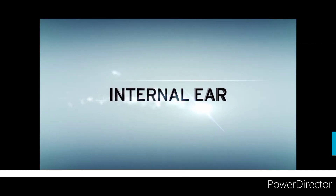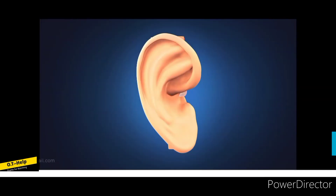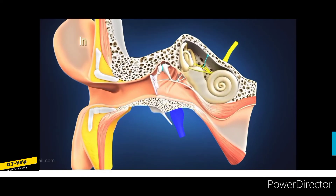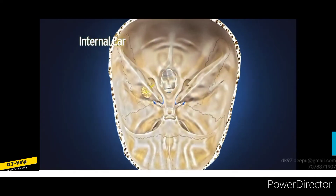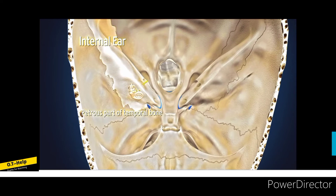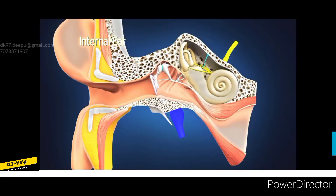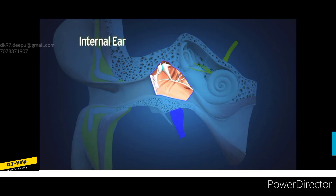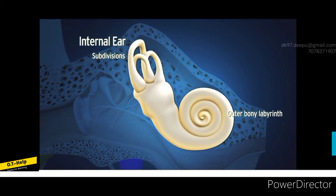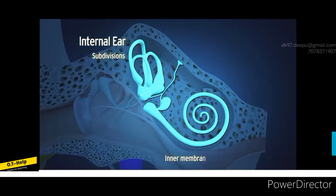The internal ear is also known as labyrinth because it has a complex structure. It is lodged in the petrous part of the temporal bone and is located medial to the middle ear. The internal ear consists of an outer bony labyrinth and an inner membranous labyrinth.